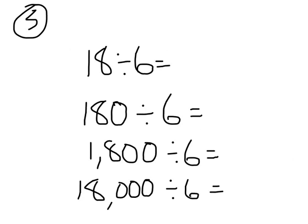Let's do one more series of examples. 18 divided by 6 — what's 18 divided by 6? It's 3. 180 divided by 6 — well, what's 18 tens divided by 6? How many tens would that be? That would be 3 tens. Write that number in standard form — it's 30.